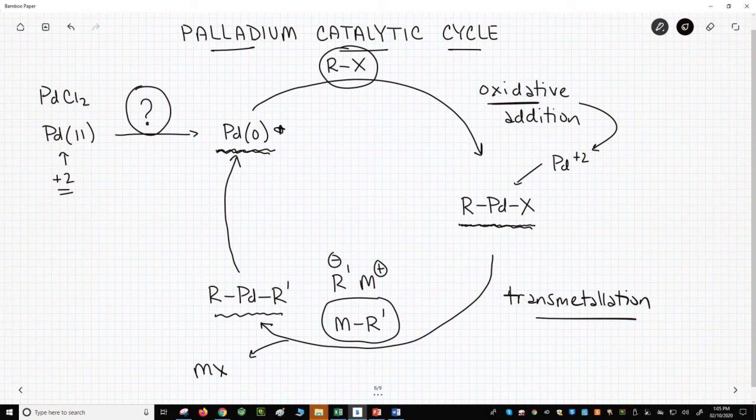This is called a transmetallation because the R prime group goes from having a bond from one metal, M, to having a bond to a different metal, palladium. Formally, palladium is still considered to be in the plus 2 oxidation state.